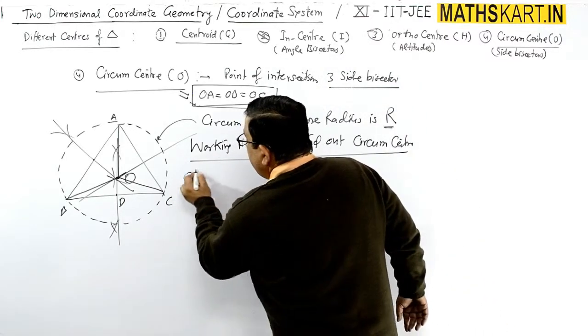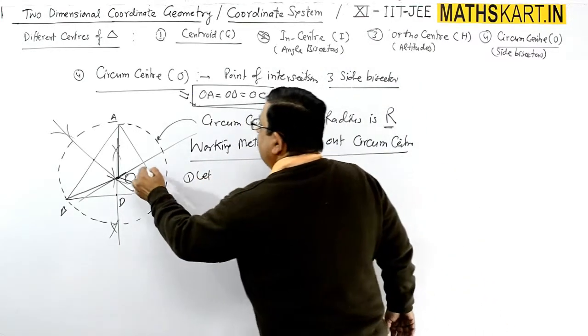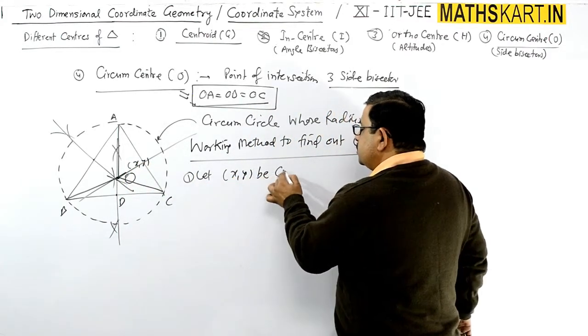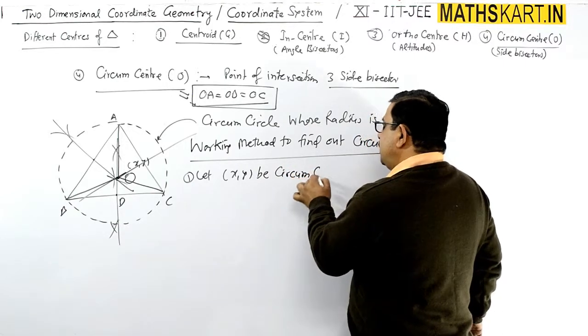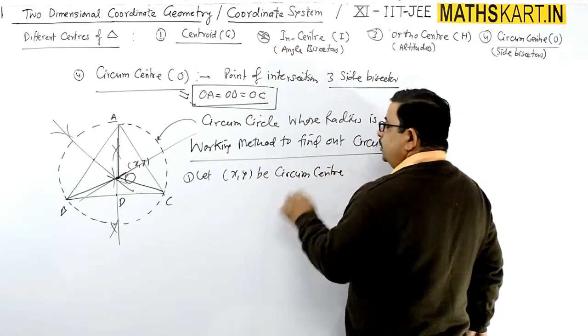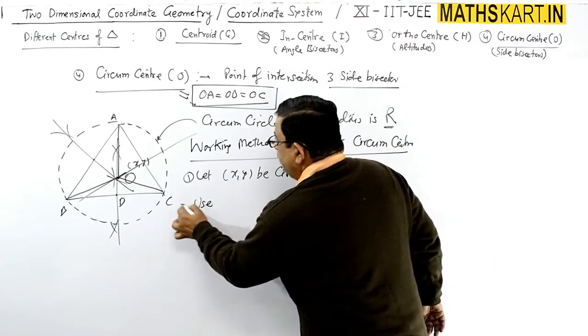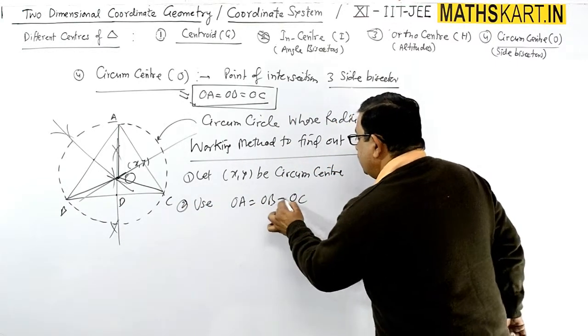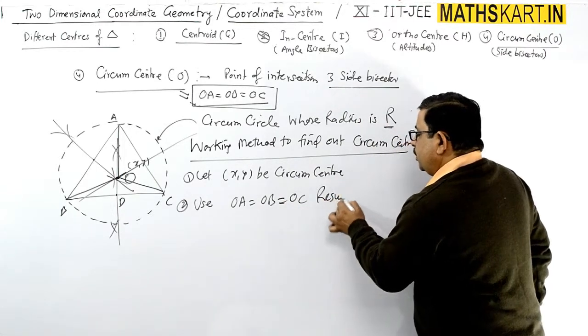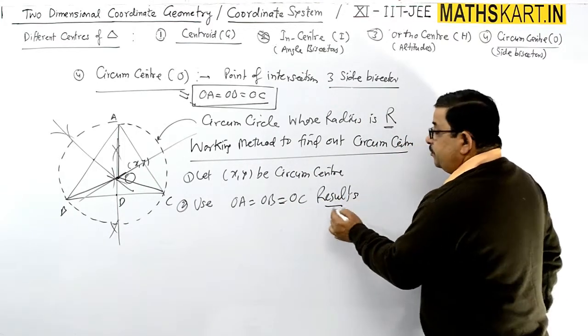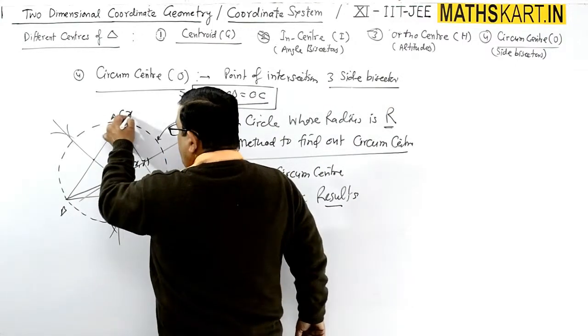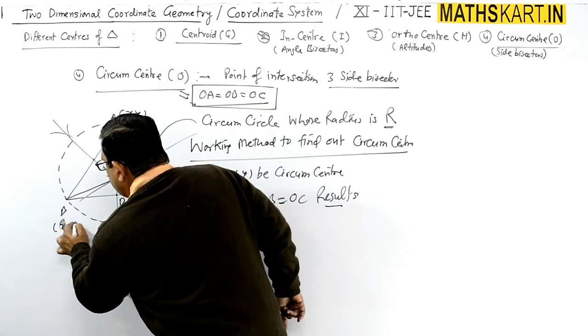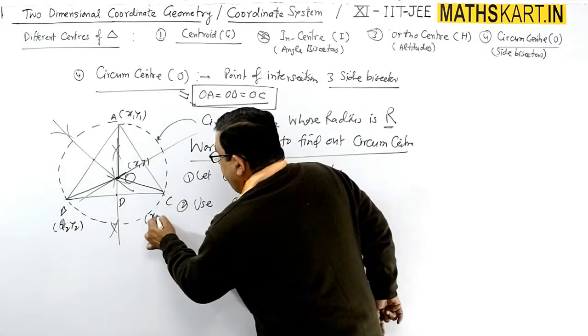Right, jahaan pe aap let ke liye, let koi bhi point leye general xy. Let xy be circumcenter. Use second point ye hai, use OA equals to OB equals to OC result. Ab aap dekhi ek cheez dekhenge, ki ye vertex A aap ko given hoga, x1 y1 pata hoga, x2 y2 malum hoga and x3 y3 we know.